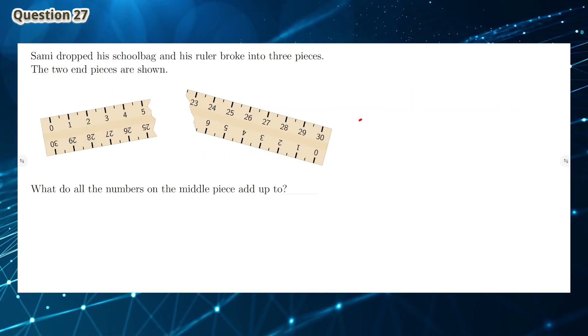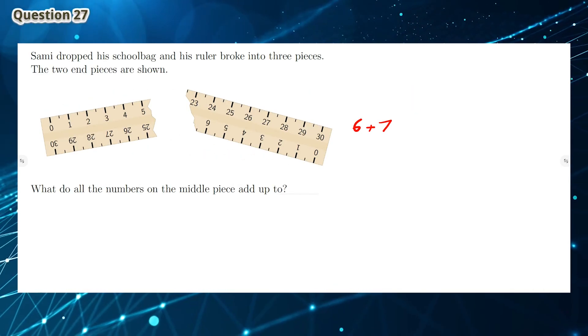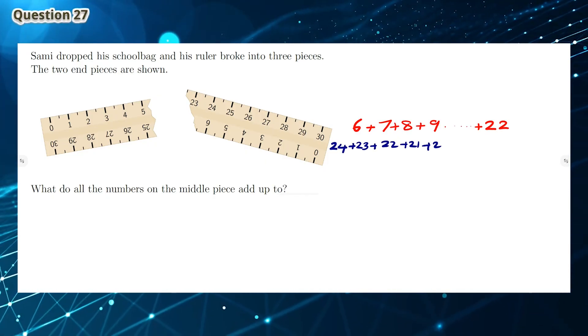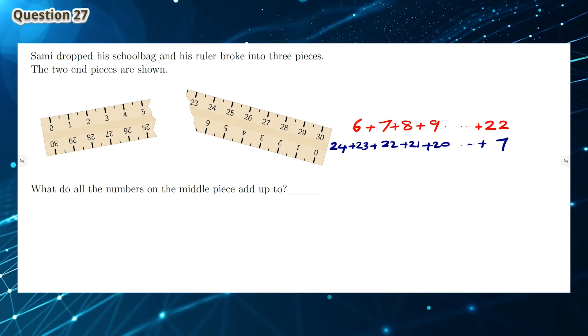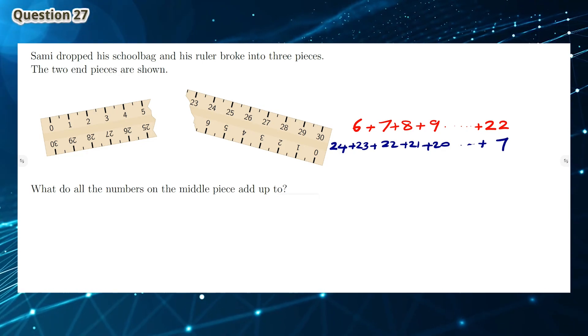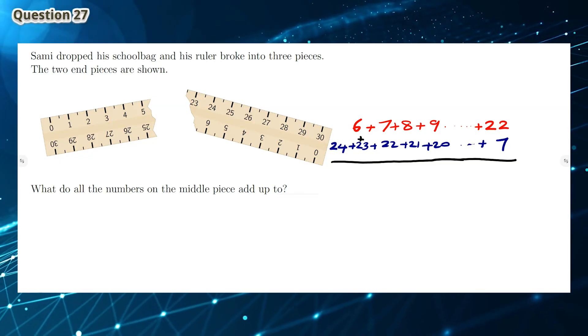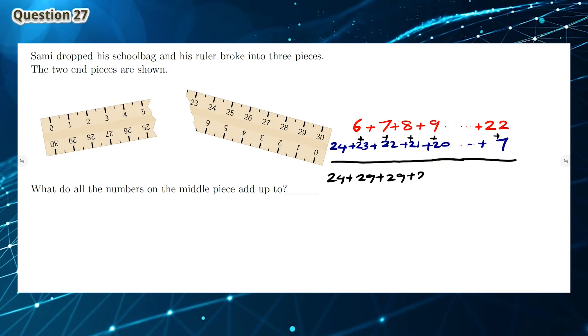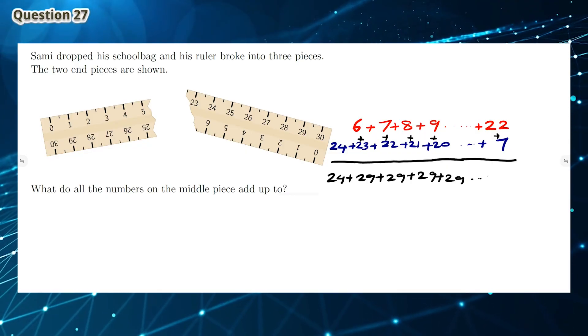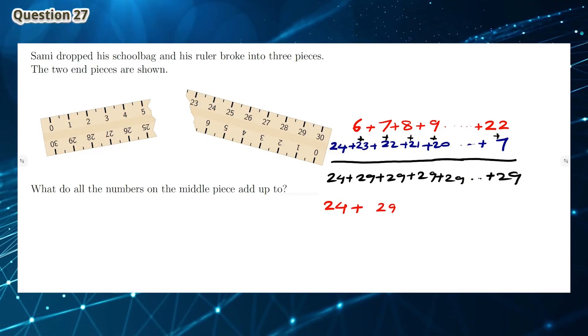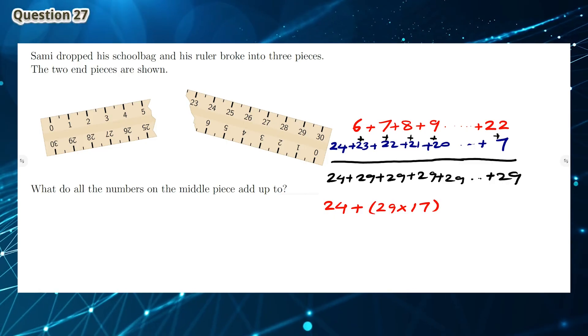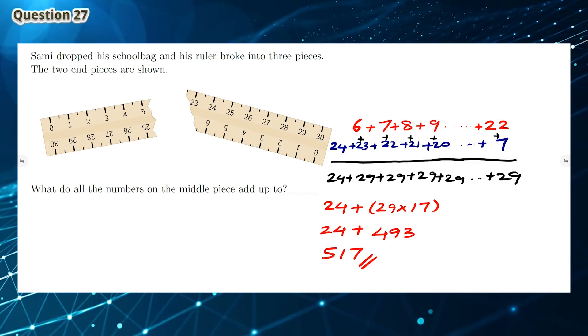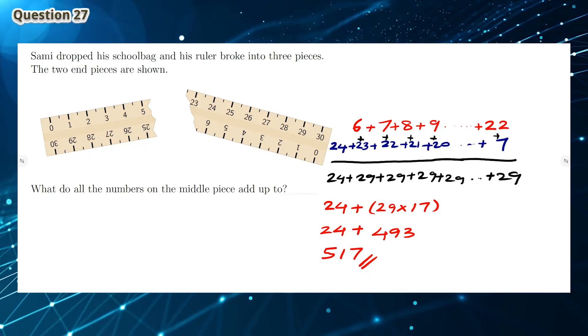Question 27: The top half of the ruler is missing the numbers from 6 to 22, and the bottom half of the ruler is missing the numbers from 24 to 7. We can write two sum equations as shown. If you add them up, we get a series of 24 plus a series of 29s. In this series, there's 1 twenty-four and 17 twenty-nines. So the total sum is 24 plus 29 times 17, which gives you 517. So 517 is the sum of all the numbers on the middle piece.